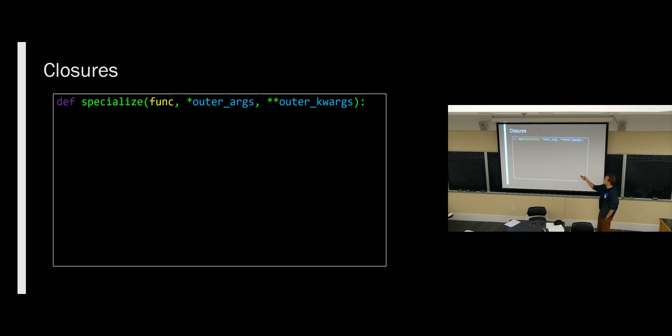You just define the function, and then inside that define a second one that takes the args and kwargs, and then at the bottom of the outer function you return the one that you want. That's the standard approach — you have your outer function called specialize, and then that function defines an inner function, and that inner function ends up getting returned without being called. Specialize takes in the function we're specializing and then the args we're specializing it over.